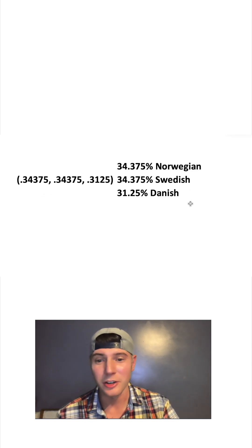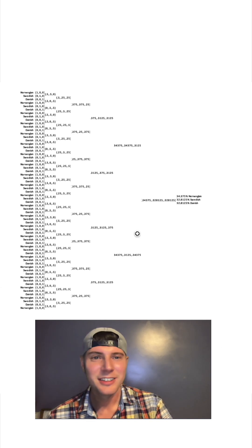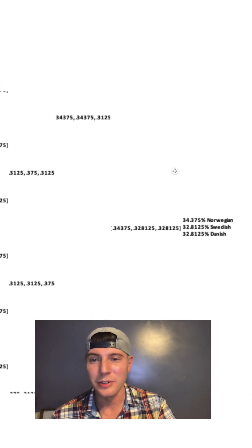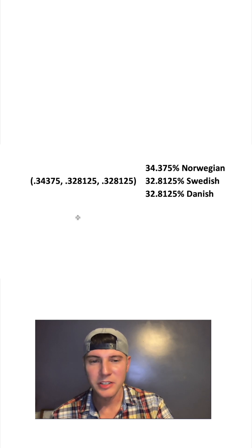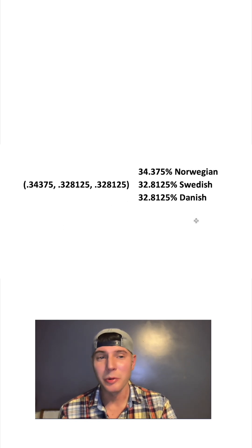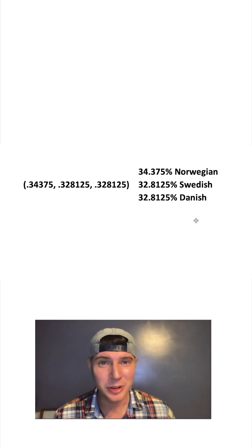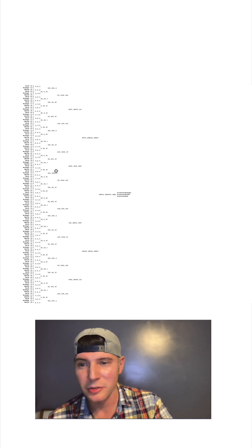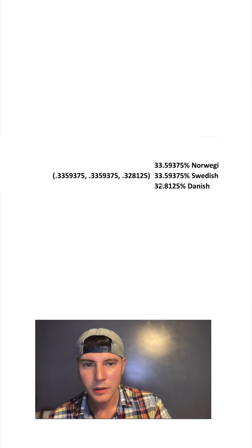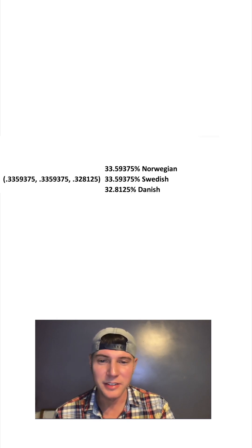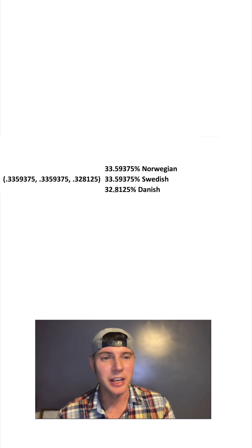Let's try it with 64 people. Here it is with 64 people — if we zoom in, we can see we're getting closer, but still not to 33/33/33. Here's starting with 128 people — let's zoom in and see how that turns out. Oh, we're getting really close now: 33.59% and 32.81%.